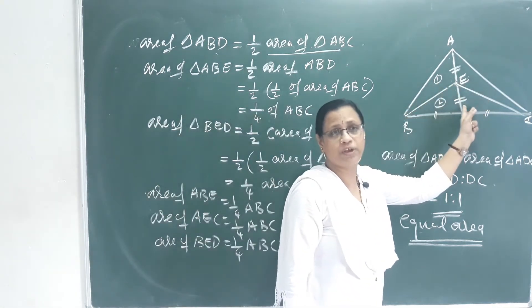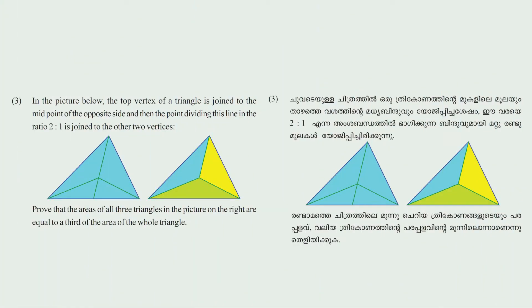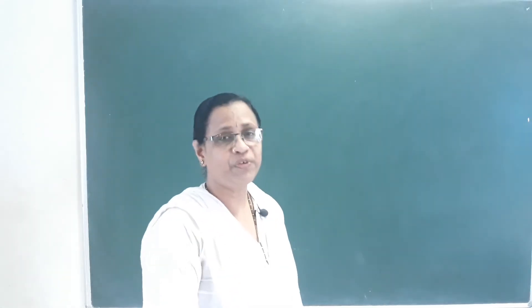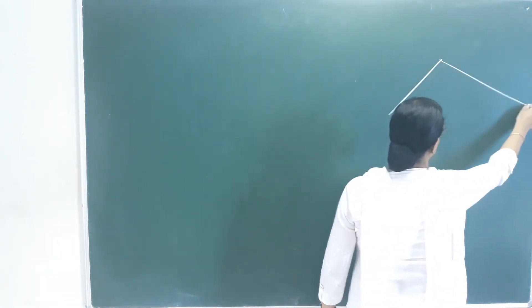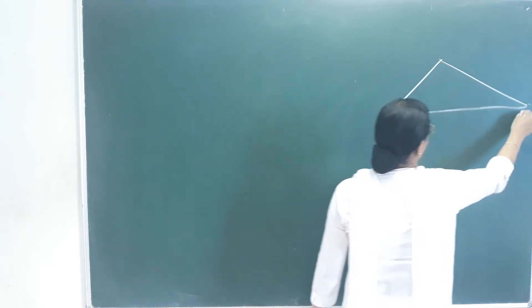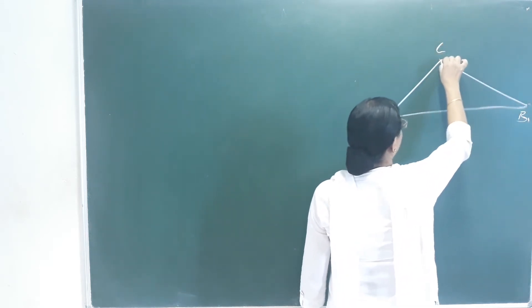In the picture below, the top vertex of a triangle is joined to the midpoint of the opposite side, and then the point dividing this line in the ratio 2 to 1 is joined to the other two vertices. Prove that the area of all three triangles in the picture are equal to one third of the area of the whole triangle. Label the triangle with vertices A, B, and C.